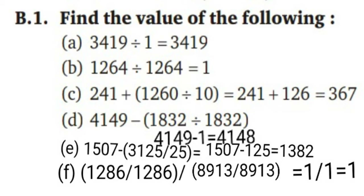Part D: first solve the bracket, answer is 1; then subtract to get 4148. Part E: first solve the bracket, answer is 1; then divide 8,913 giving 125; then subtract to get 1382.